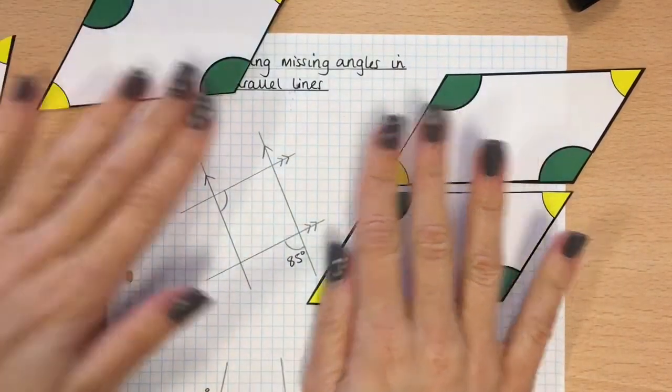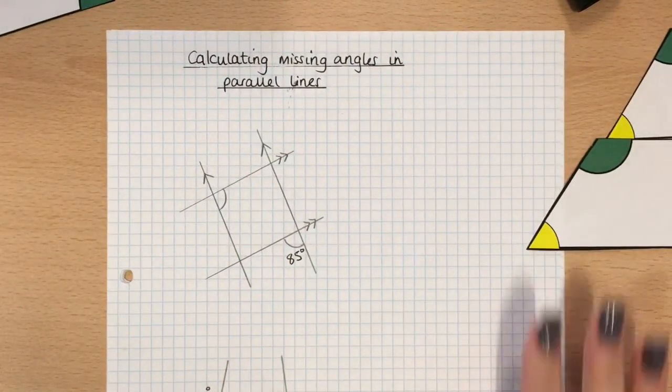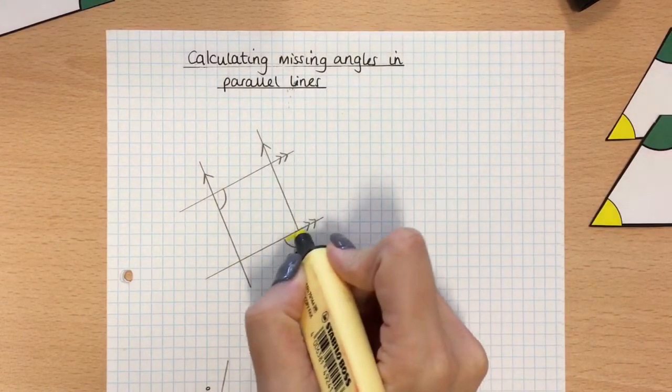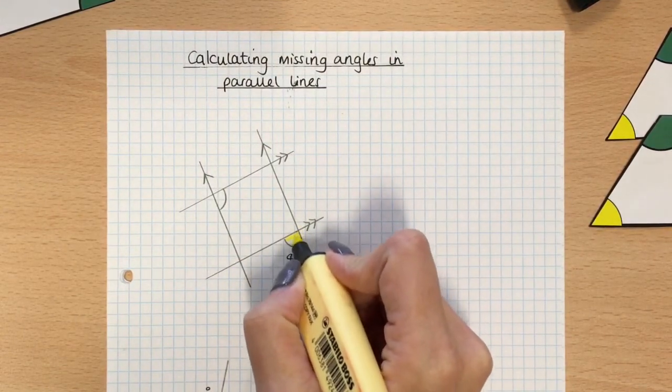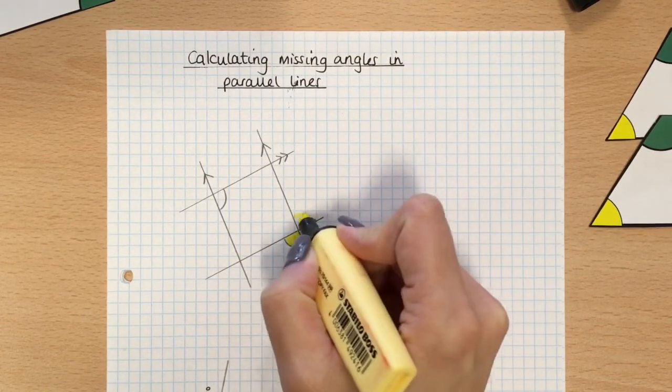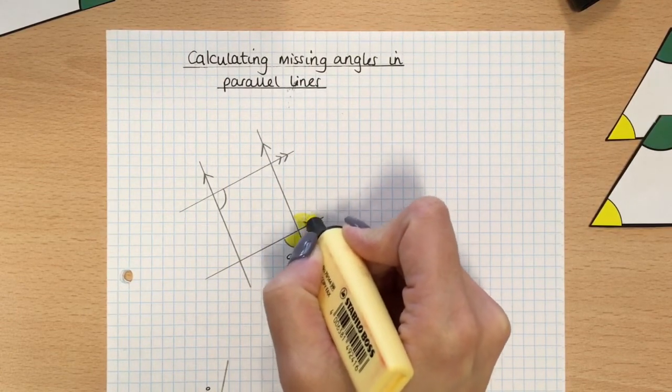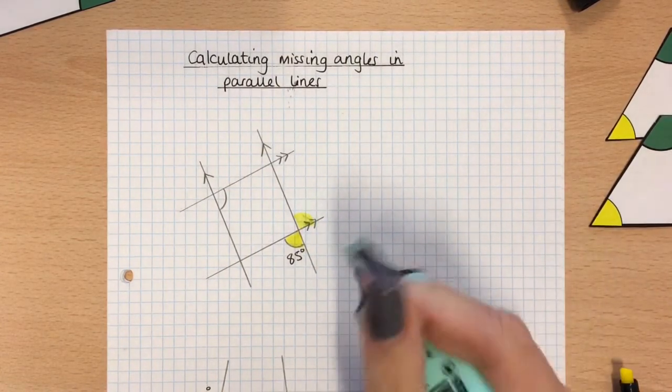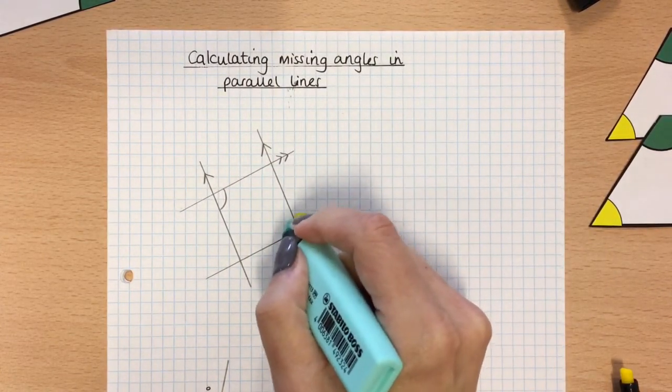So if I'm looking at the shape that I've got in the first one, and we're thinking about doing some colours, I'm going to colour in my 85 degree angle yellow. I know that the one opposite it is going to be exactly the same, so therefore the other ones in this shape are going to be my bluey green.